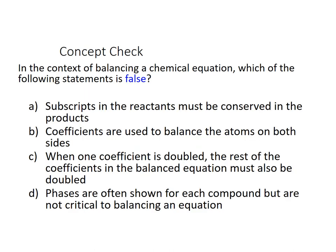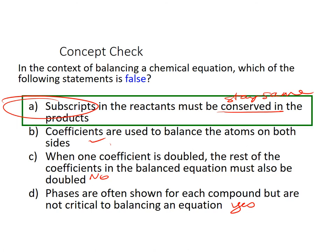All right, in the context of balancing a chemical equation, which of the following statements is false? Subscripts in the reactants must be conserved in the products, meaning they have to stay the same. Coefficients are used to balance the atoms on both sides. When one coefficient is doubled, the rest of the coefficients must also be doubled. Well, no, we know that's not true. We didn't do that. Phases are often shown for each compound, but are not critical to balancing the equation. That is true. So coefficients, yep, we do use those. So it's this one. Subscripts must be conserved. No, they do not. You don't need to have the same subscript. That's why we balance.